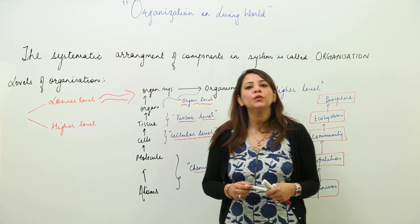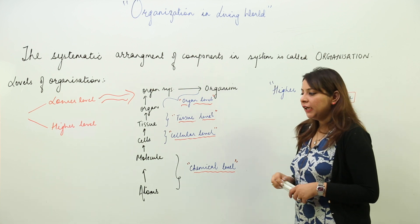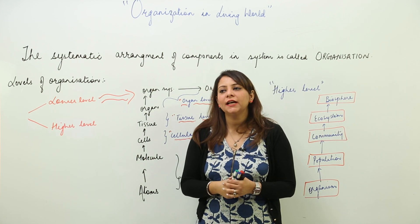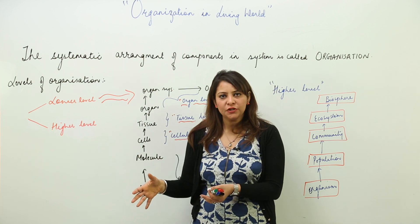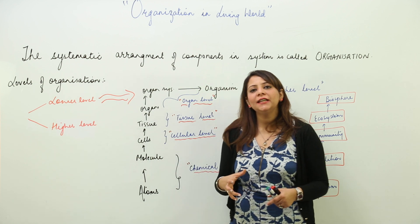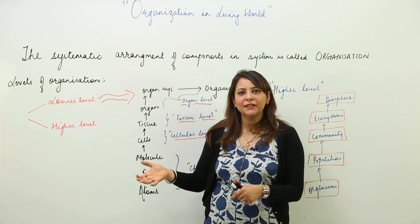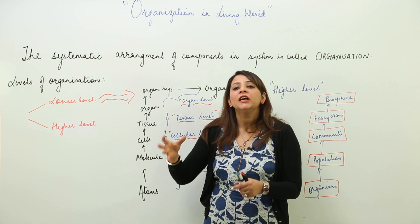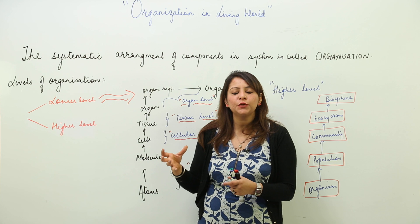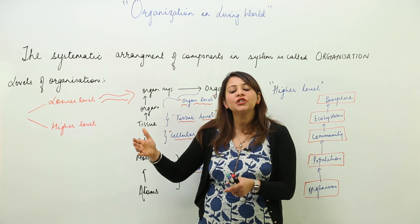We are going to start with a unit on organization in the living world. In this chapter, we'll look at how a machine can perform its task because it is formed of certain small units which make it capable to perform its function.